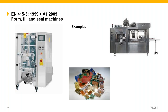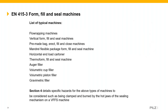EN 415-3 covers form fill and seal machines, including vertical and horizontal fill and seal machines typically used in the snack industry for crisps and snacks. Section 4 details specific hazards for these machine types, such as being clamped and burnt by the hot jaws of a sealing mechanism on a vertical form fill and seal machine — there are a significant number of hazards and potential injuries associated with that type of issue.